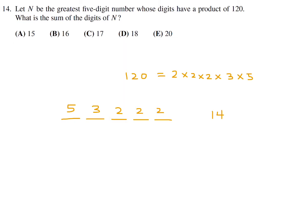We need to make the number as large as possible. The largest digit we can form is 8 (from 2 × 2 × 2). That leaves only 3 and 5. Since 3 × 5 = 15, which is not a single digit, we place 5 and 3 separately. The remaining two slots get 1s (since we have no factors left). So the number uses digits 8, 5, 3, 1, 1 — and 8 × 5 × 3 × 1 × 1 = 120. ✓